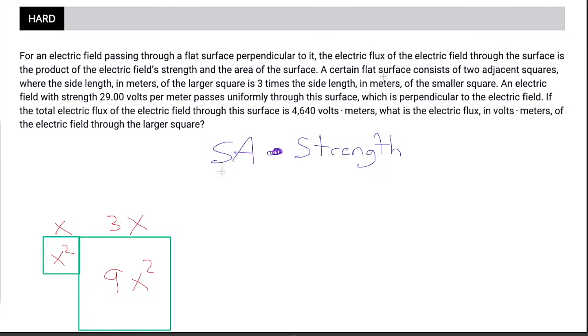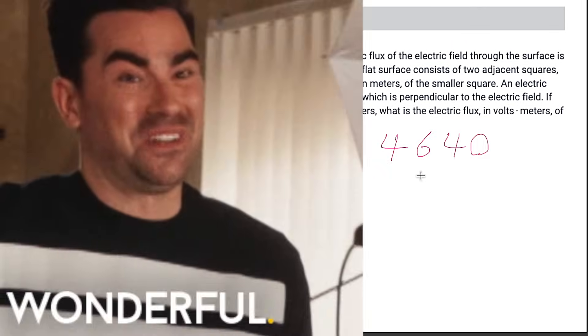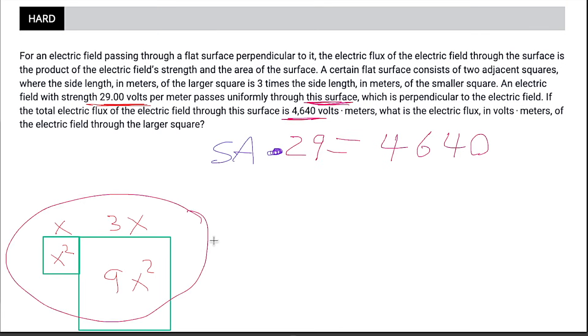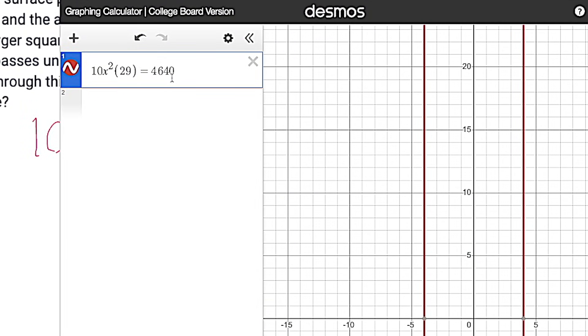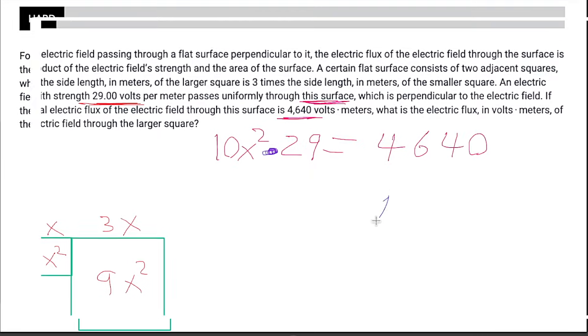So everything's looking really nice so far. As we continue down, it tells us the strength. An electric field with strength 29 volts per meter passes through this surface. Wonderful. Our strength can now be replaced with 29. I love it. Furthermore, it tells us that when it passes through this surface, the entire surface that we just drew, the electric flux is 4640. So the answer to this is 4640. Wonderful. Now let's just replace surface area with our actual surface area, which is x squared plus 9x squared. 10x squared. And at this point, we could certainly use algebra and solve for x. Or we could be a little bit lazy and we could use Desmos. I don't know about you, but I'm feeling pretty lazy. So we had 10x squared times 29 equals 4640. And we could see that our answer for x is 4, which is, again, just wonderful. So x equals 4. Cool. Is that our answer? Not quite.